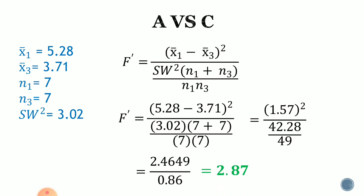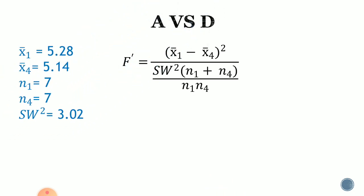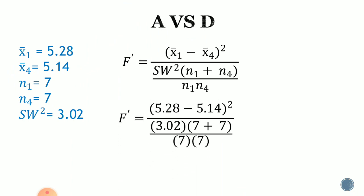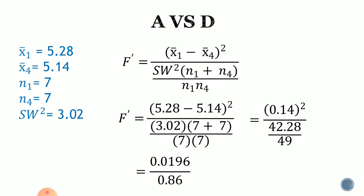Next is A versus D. The mean of group 1 is 5.28, and the mean of group 4 is 5.14. N sub 1 and N sub 4 are both 7, and SW squared is 3.02. Plugging these into the formula: the quantity 5.28 minus 5.14, squared, all over 3.02 times the quantity 7 plus 7, all over 7 times 7. Simplifying: 0.14 squared over 42.28 over 49, giving 0.0196 divided by 0.86, which equals 0.02.